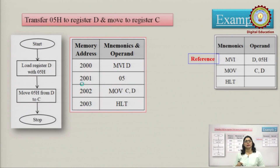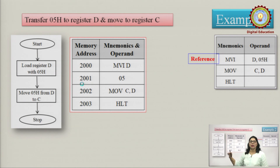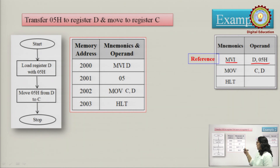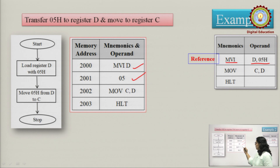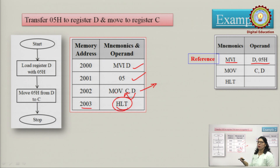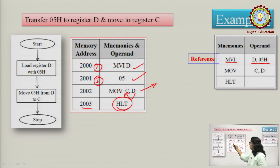Second example: transfer some data to register D, aur phir us register ko register C mein le jaana. Sab se pehli instruction thi MVI D,05H — a 2-byte instruction. Pehli byte mein MVI D gaya, doosari mein 8-bit data. Tisari memory location pe MOV C,D — a 1-byte instruction — aaya, jiska directly hexadecimal code milega lookup table pe. Aur 2003 pe halt the program. Is program ko karne ke liye hum ne chaar memory spaces ka use kiya.